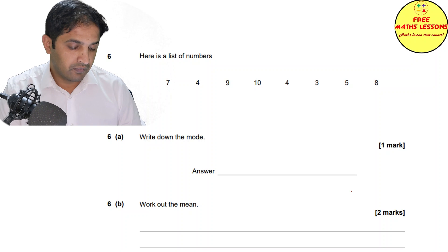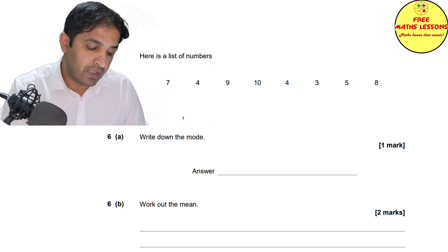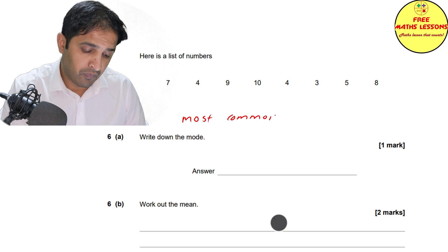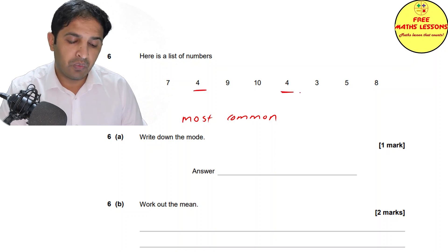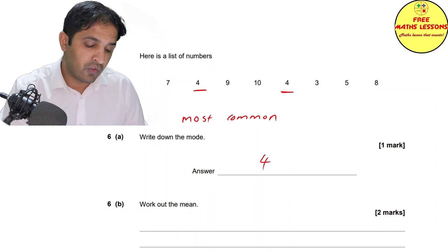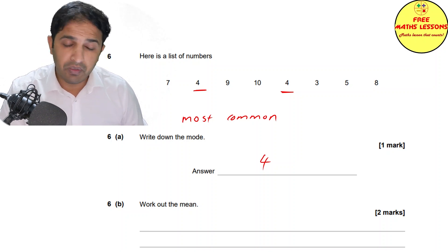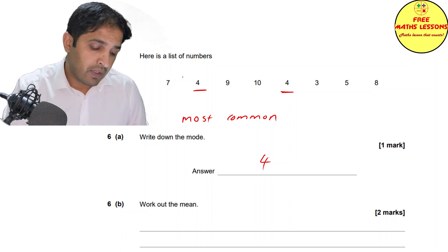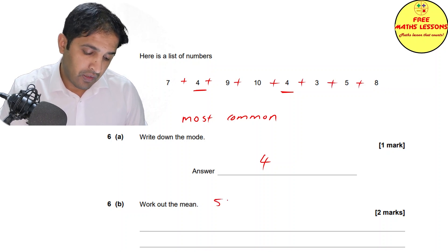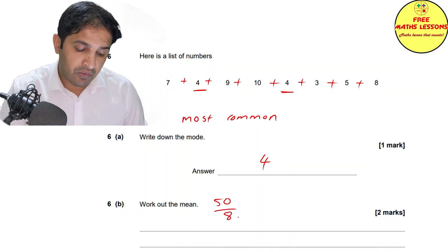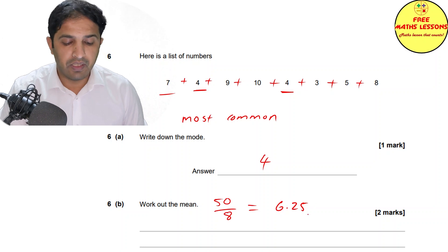Question six: from the list of numbers, find the mode. Mode is the most common — every number appears once except four, which appears twice, so four is the mode. For the mean, add all numbers together — they add up to 50 — then divide by eight because there are eight numbers. 50 divided by 8 gives 6.25, which is the mean.